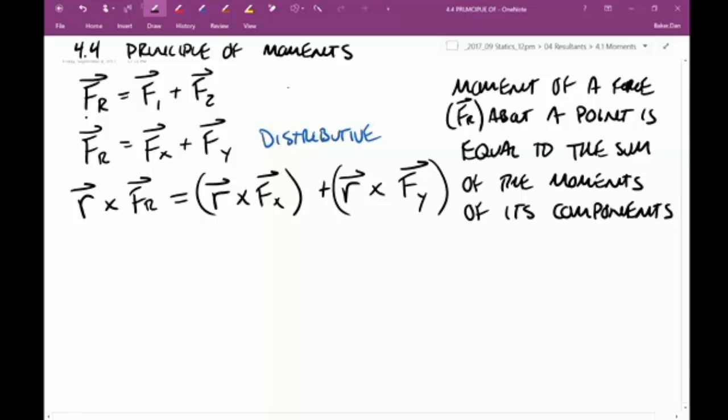Now when I look at these two components, knowing that the cross product always gives me the perpendicular, if I'm crossing a full r vector with Fx, what's the only part of r that would give me a nonzero cross product with Fx? The x or the y? The y, right, because the y is perpendicular to it.